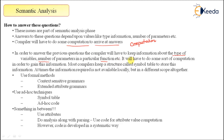The compiler has to do some sort of computation to gain this information. To store this information, most compilers keep a structure called a symbol table.